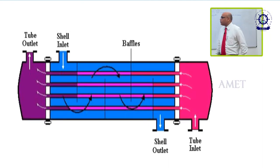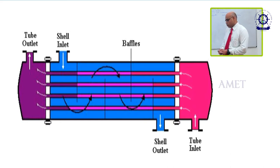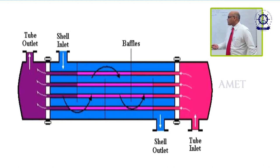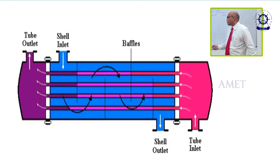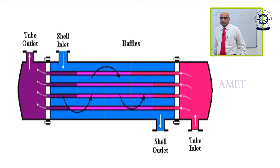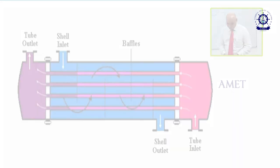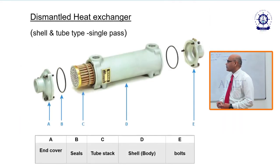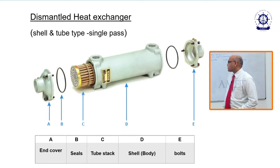This is the shell-and-tube heat exchanger. These are the tubes in which the cold fluid is flowing. This is the shell in which the hot fluid is flowing, and these are the end covers and end plate. In the end covers there are anodes for protecting from corrosion. This is the shell tube stack, end tube plate, end covers, and these are gaskets or O-rings.